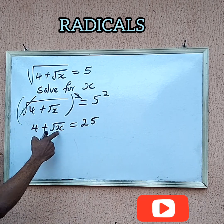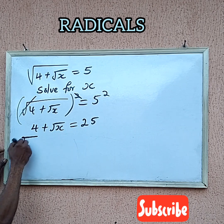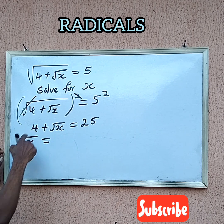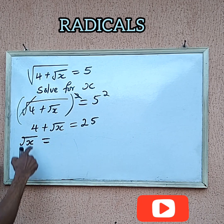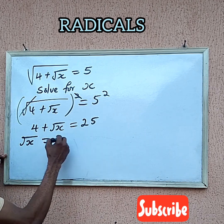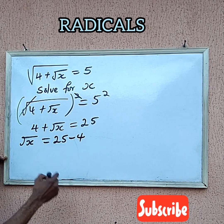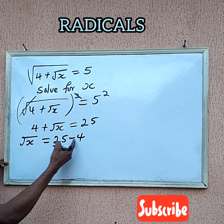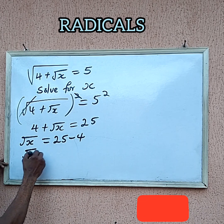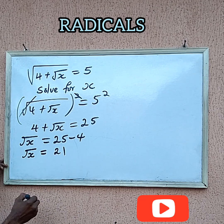Now we still have a problem here, so let us isolate the square root of x. Isolating root x gives us root x equal to — I am going to subtract 4 from both sides, taking this 4 across to the other side — so 25 minus 4 gives us the square root of x equal to 21.